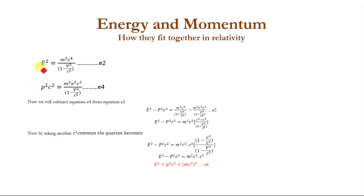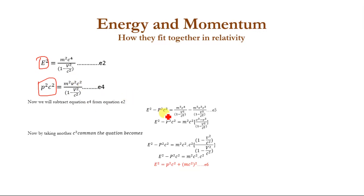Now we have two equations: one for energy and the other for momentum. For energy we have E², and for momentum we have derived P²c². Now we will subtract equation number 4 from equation number 2, giving us E² minus P²c² on the left side.